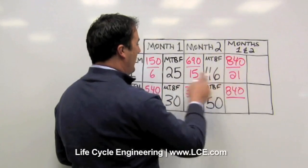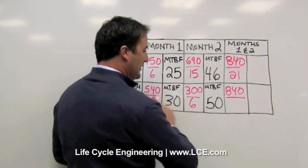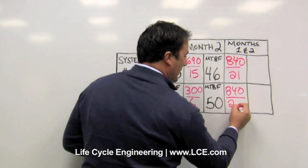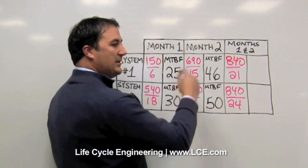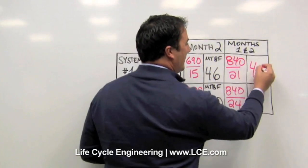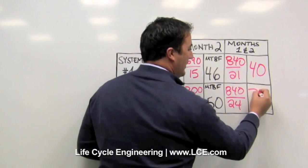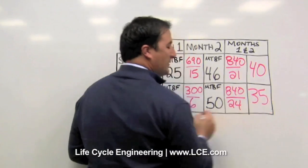For system one, in both months, they ended up with 21 failures, but for system two, they ended up with 24 failures. This gives us a mean time between failure of 40 for system one and 35 for system two.